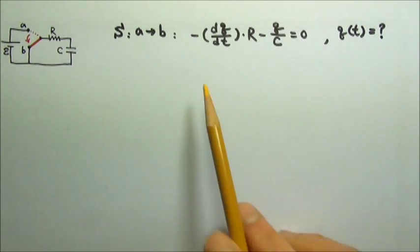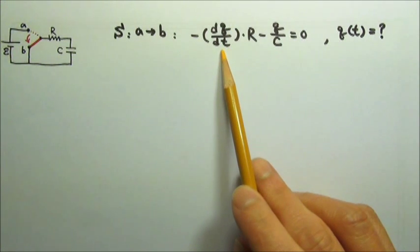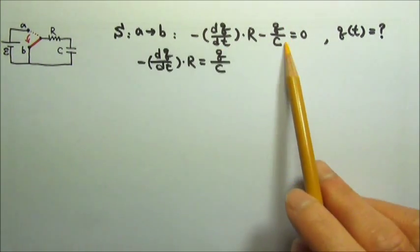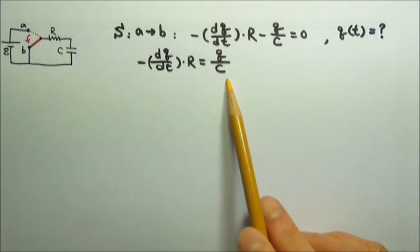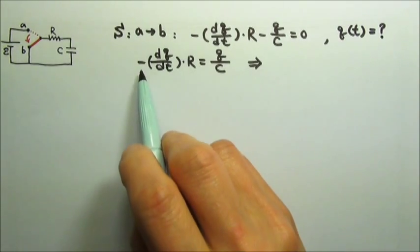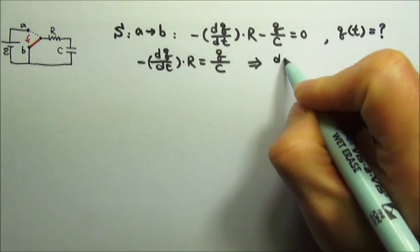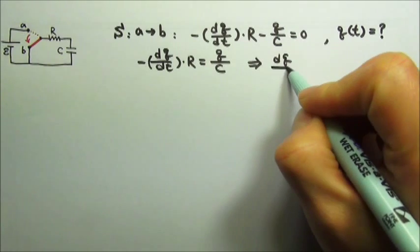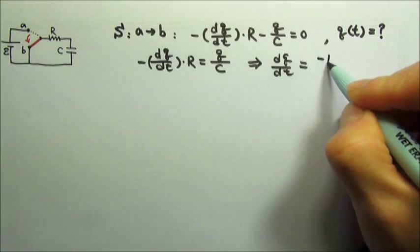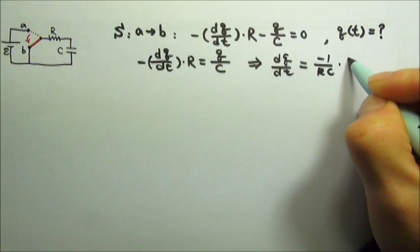First, we can rearrange the equation to get dq/dt. We can move this term to the other side, and then divide by negative r on both sides, so we get dq/dt equals negative 1 over rc times q.